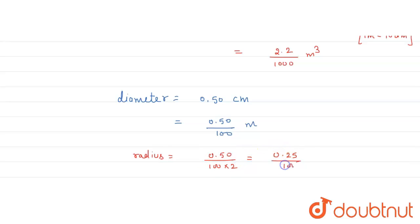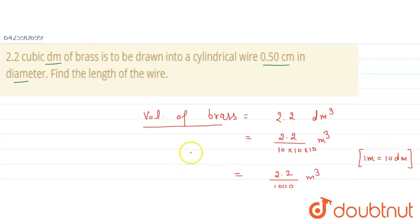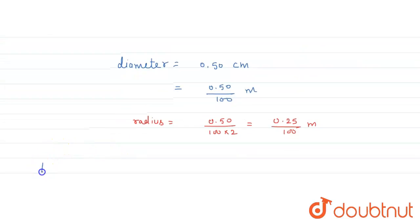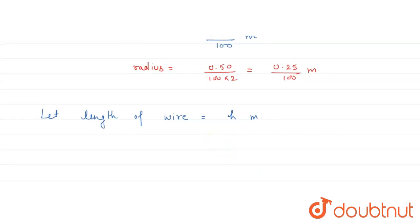This is the radius of the cylindrical wire. Now we have to find out the length of wire, so length of wire is equal to h meter. According to the question, volume of brass must be equal to the volume of the wire.